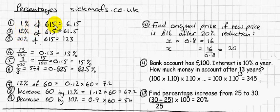So 1% of 615, all you do is move the decimal point two places because 1% means one hundredth. And to work out one hundredth of something, you just divide it by a hundred.